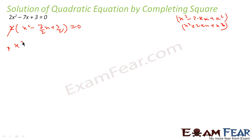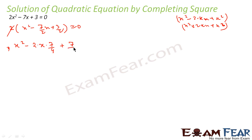Now I can write this as x² - 2·x·(7/4), identifying k = 7/4. I need to add and subtract k² = (7/4)², so I add and subtract (7/4)²: x² - 2·x·(7/4) + (7/4)² - (7/4)² + 3/2 = 0.